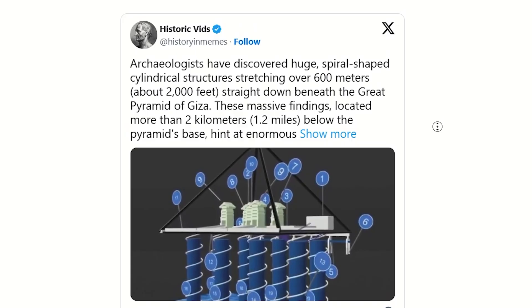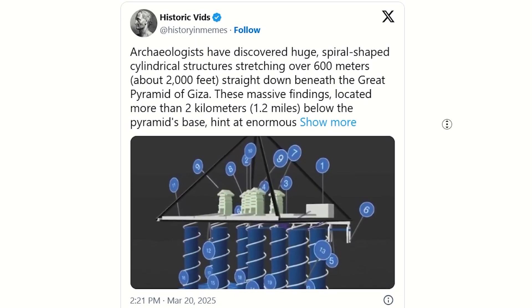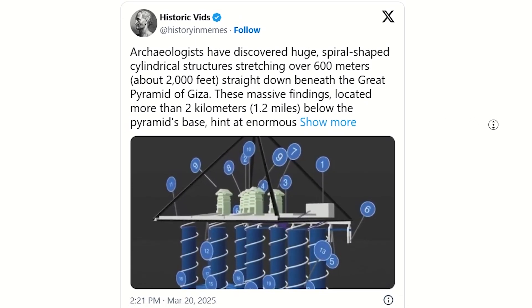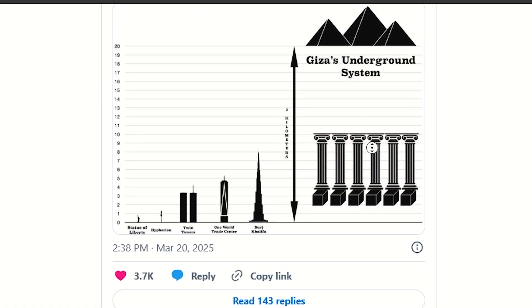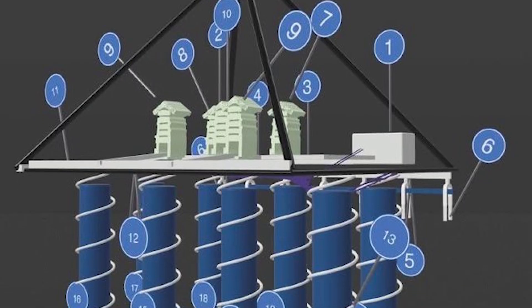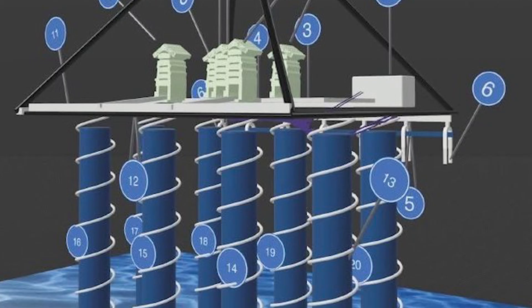So new technology this week reveals massive power grid-like structures coming down from underneath the Great Pyramid directly into bedrock, going over 2 kilometers deep. Let me repeat that. 2 kilometers deep.